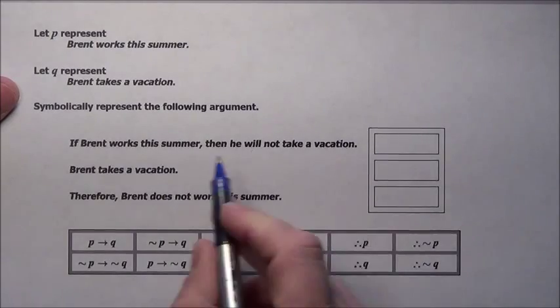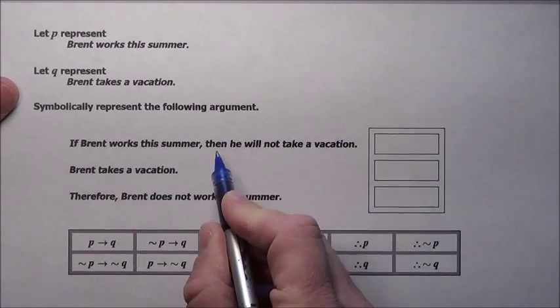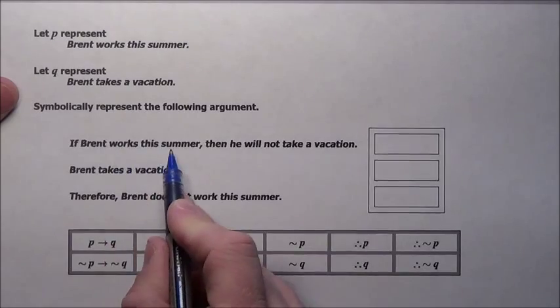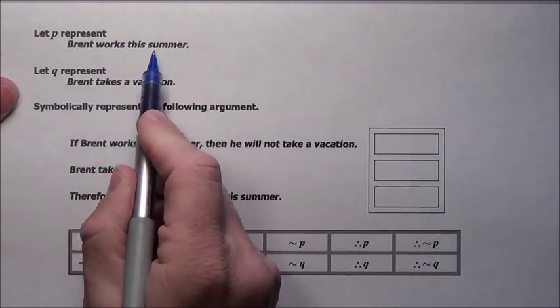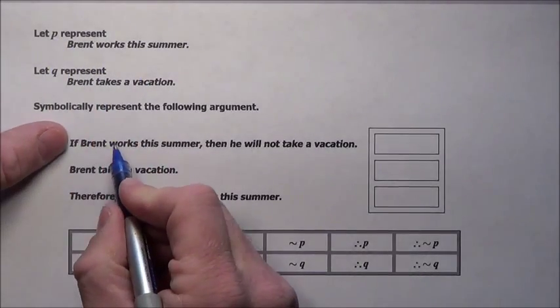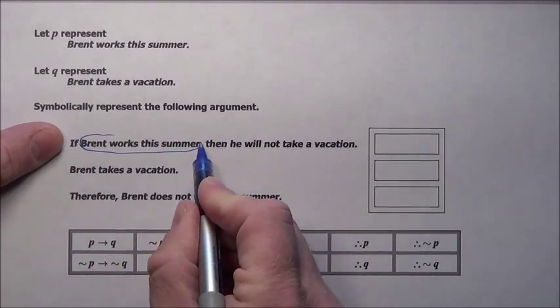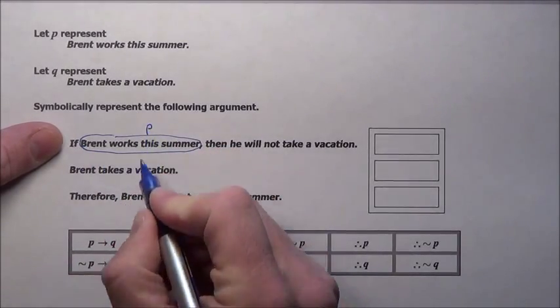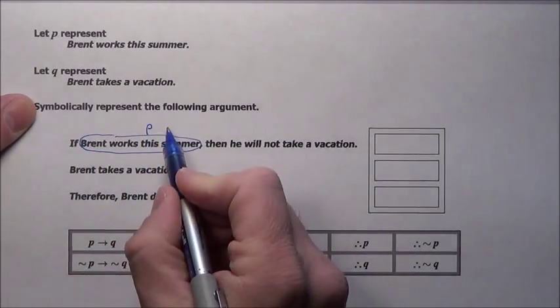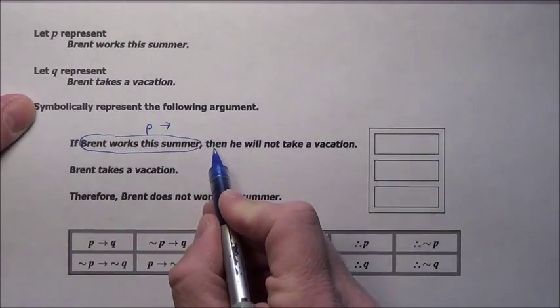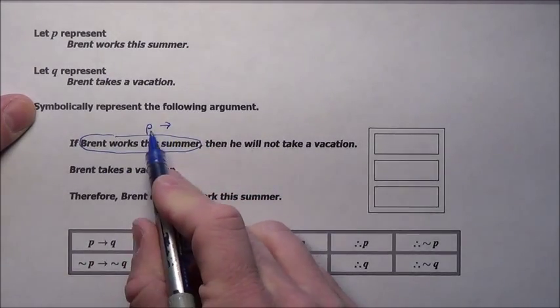In this first spot, we want to take 'If Brent works this summer, then he will not take a vacation.' Brent works this summer is represented by P. So this part right here, Brent works this summer, that's our P statement. So we're going to write that. Then, so that's if P, then.